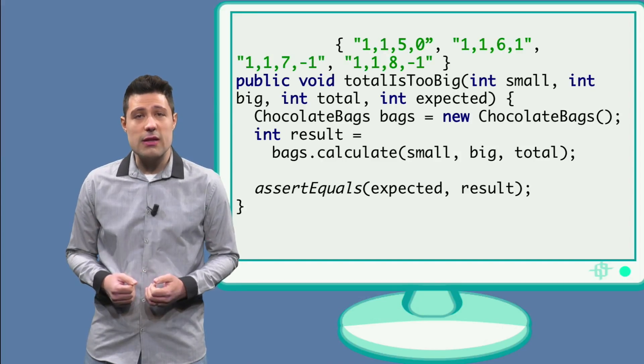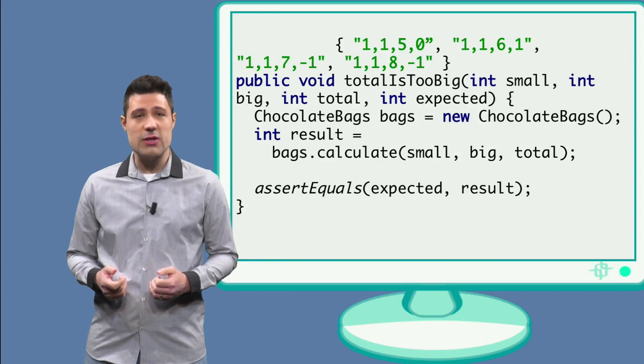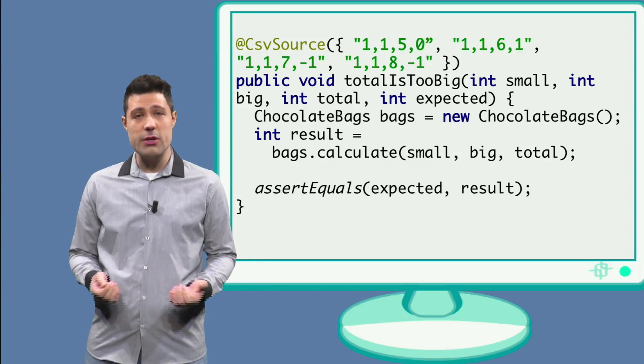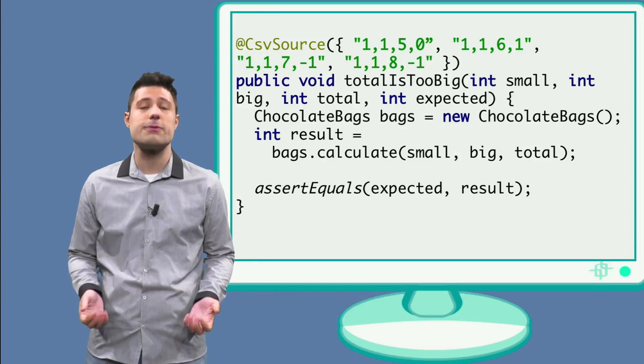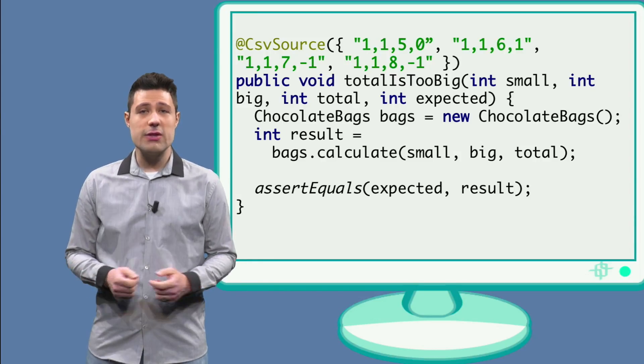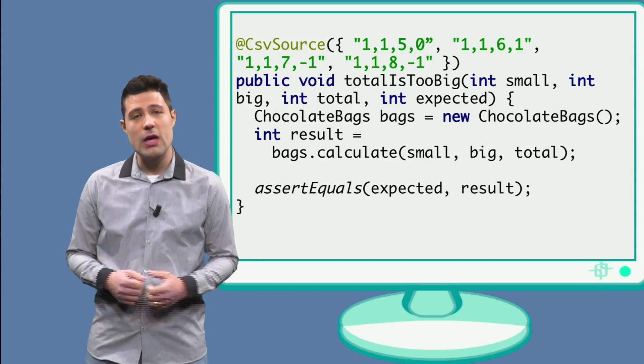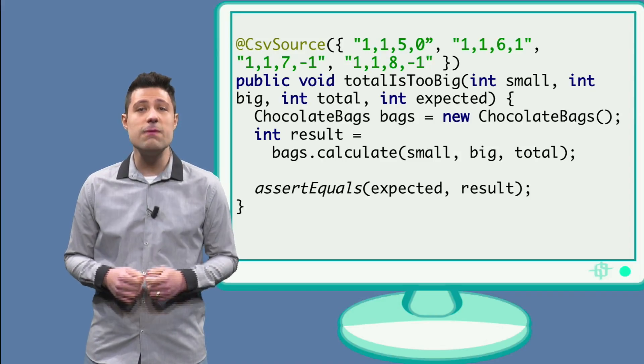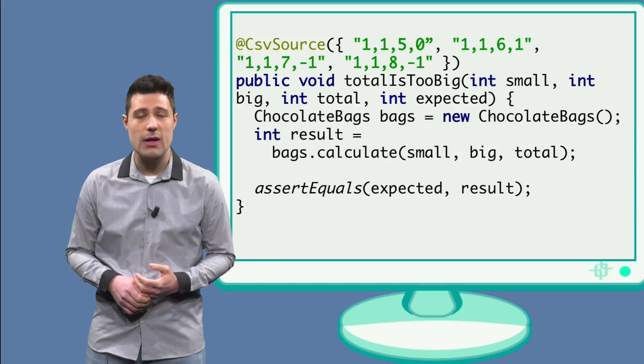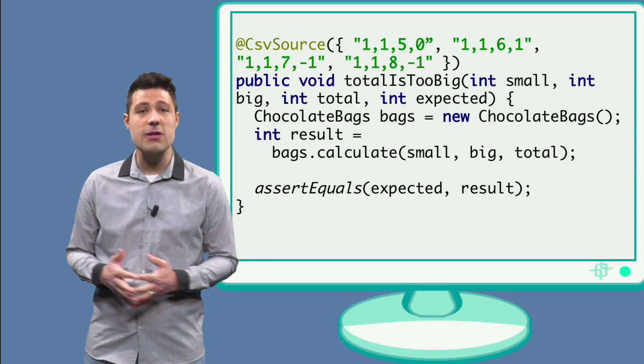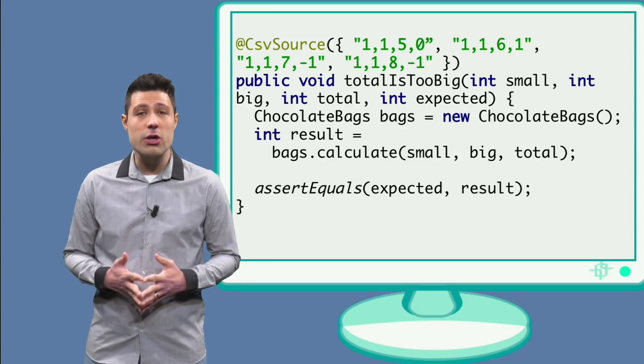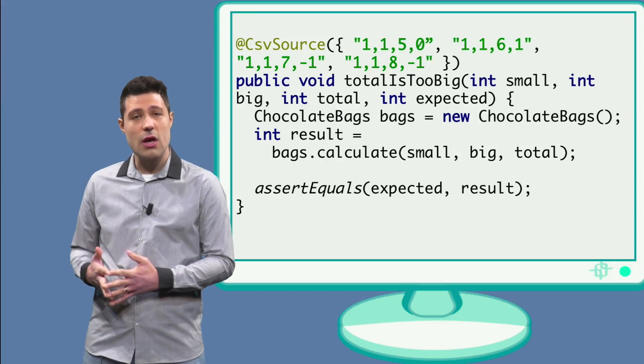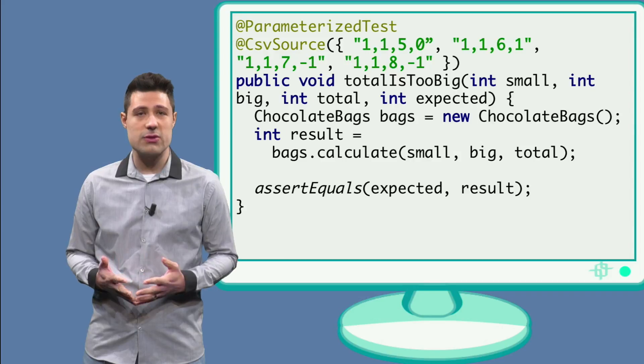For JUnit to understand it, we put all these strings inside the @CsvSource annotation. After all, the parameters are comma-separated values. As you can see, it receives an array of strings as parameter. Each parameter is a test case that will be executed individually by JUnit. Finally, we need to annotate this method as a test method. And as we are using a parameterized test and csv source, we should use @ParameterizedTest instead.